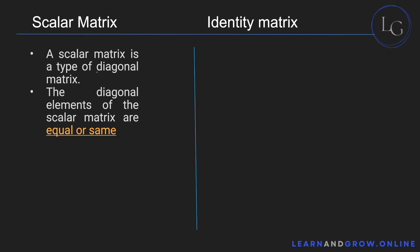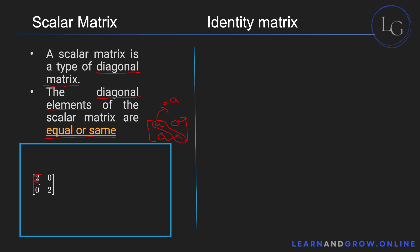A scalar matrix is basically a type of diagonal matrix — that is the first requirement. It is a diagonal matrix, and every element inside the principal diagonal must be equal. For example, this matrix has every element outside the principal diagonal equal to zero, and the elements inside the principal diagonal are both equal to a — so this is a scalar matrix. Similarly, a matrix where the diagonal elements are both equal to two is a scalar matrix, and one where the diagonal elements are all equal to five is also a scalar matrix.